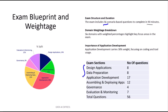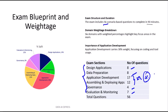Design Application has 8 questions. Data Preparation has 8 questions. Application Development has a massive 17 questions. Assembling and Deploying Applications has 12 questions. So overall, Application Development and Assembling and Deploying Apps together has nearly 29 questions out of 56 — that's the core of your entire exam. Governance has 4 questions, and Evaluation and Monitoring has 7 questions. Here is the most important warning: you must pass every single domain. You can't get 100% in Application Development and fail in Governance. If you get zero in any section, even those small 4 questions, you will fail the whole exam. This proves they are testing you on a complete engineer.